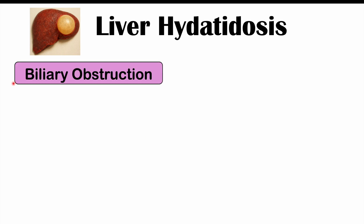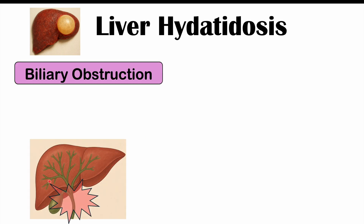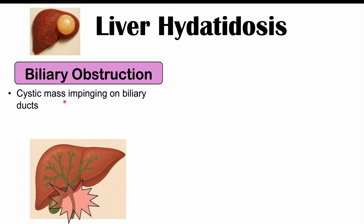Other findings can include biliary obstruction. Inside the liver, we have intrahepatic biliary ducts. Bile produced by the liver travels through ducts that coalesce into the right and left hepatic ducts, join the cystic duct, and eventually flow through the common bile duct into the duodenum. If a cyst is pushing on some of these biliary ducts, it would prevent bile from being excreted to the gallbladder or out into the small intestine, causing a buildup of bile — a biliary obstruction.